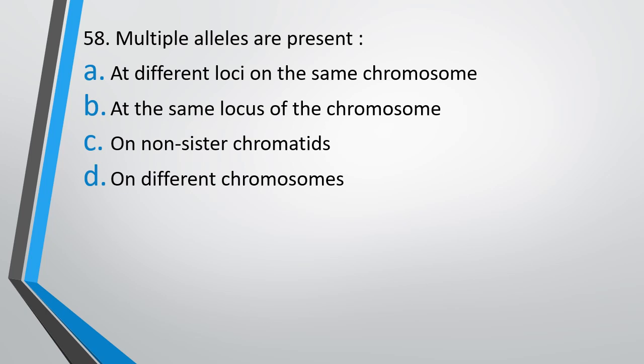Question number 58. Multiple alleles are present. Option A: At different loci on same chromosome. Option B: Same locus of the chromosome. Option C: Non-sister chromatids on different chromosomes. The correct answer is option B at the same locus of chromosomes.